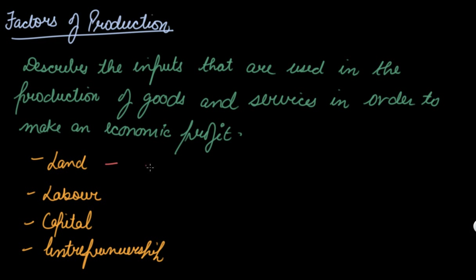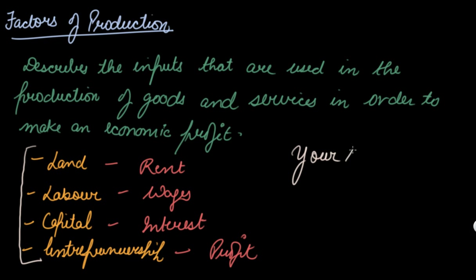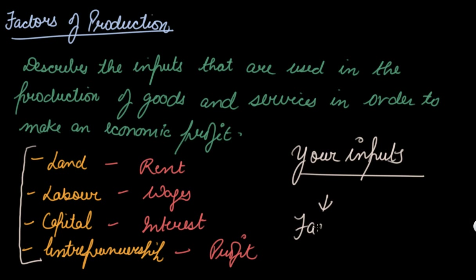To land, what do you give? Rent. To labor, what do you give? Wages. To capital, what do you give? Interest. And to entrepreneur, what do you give? Profit — or the share of profit. So anything that you require, your inputs that are required to make the finished goods, those are your factors of production.